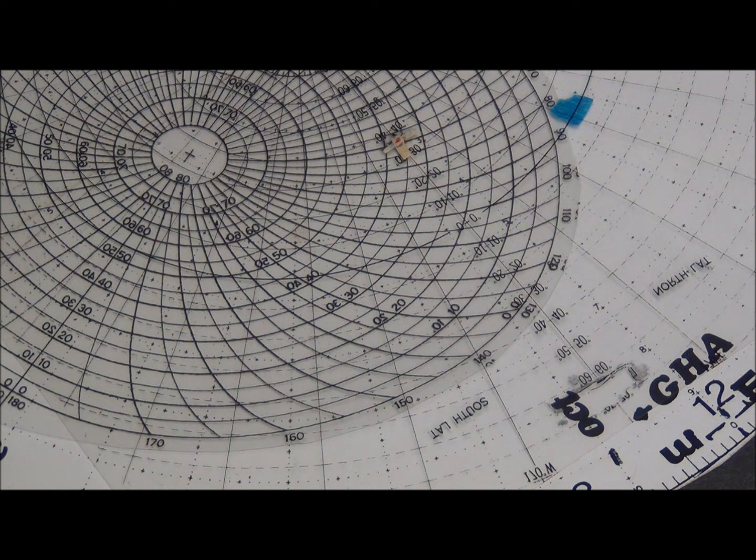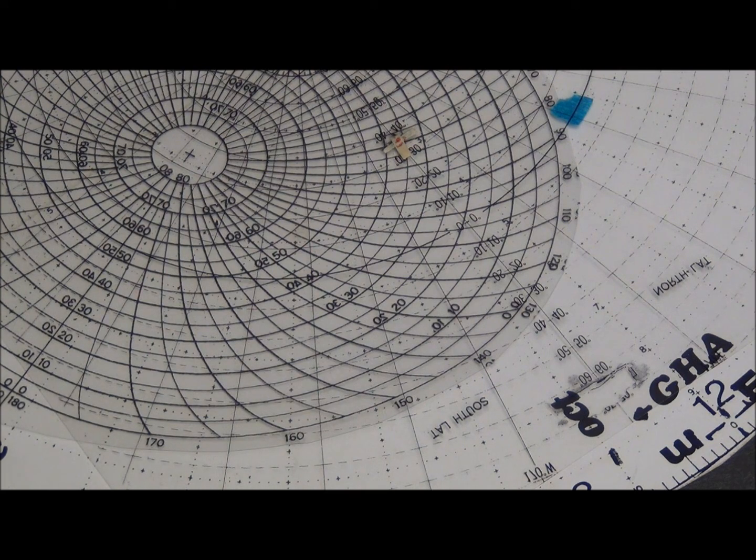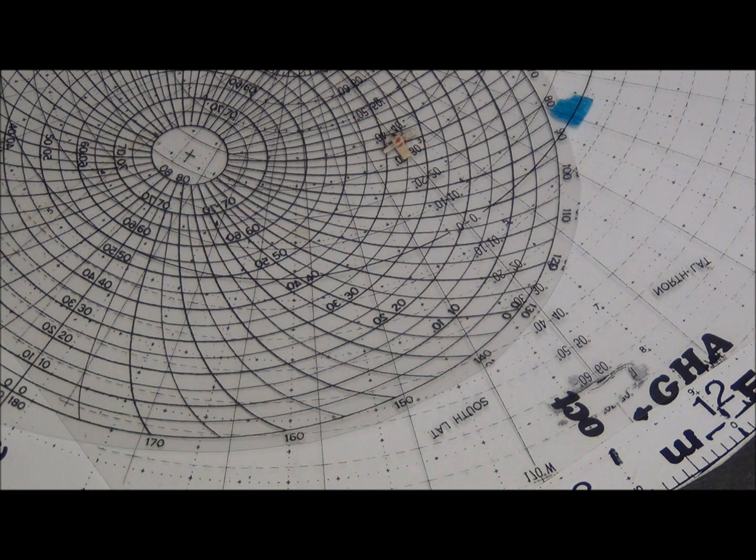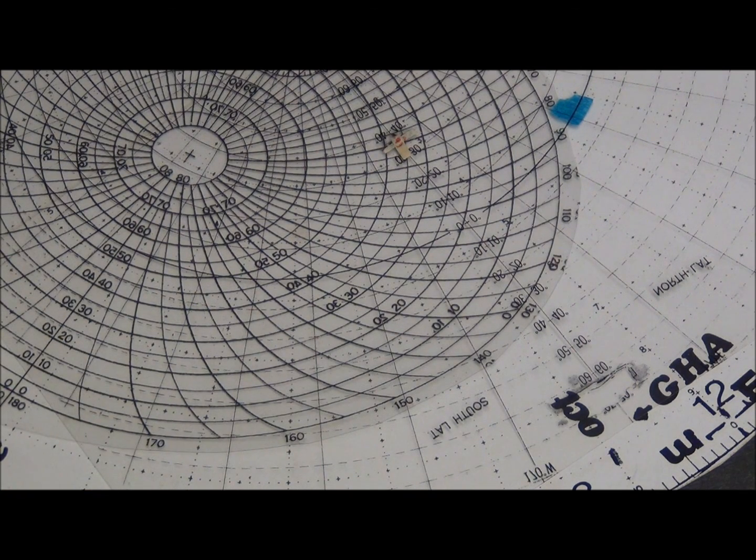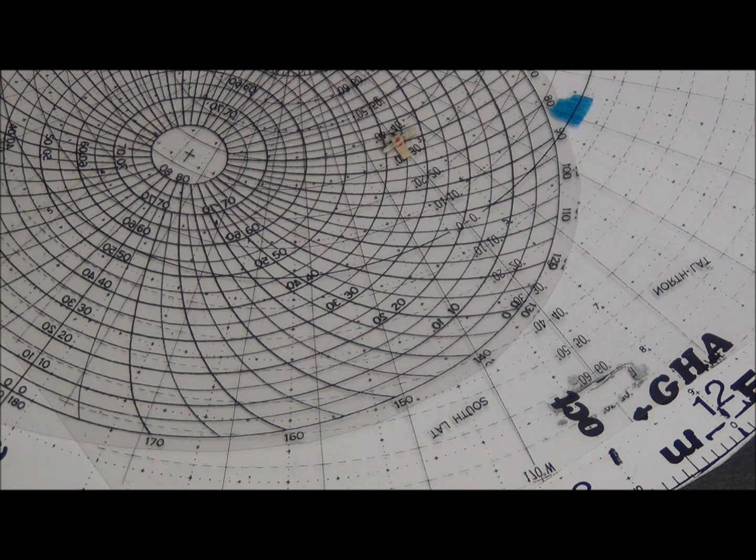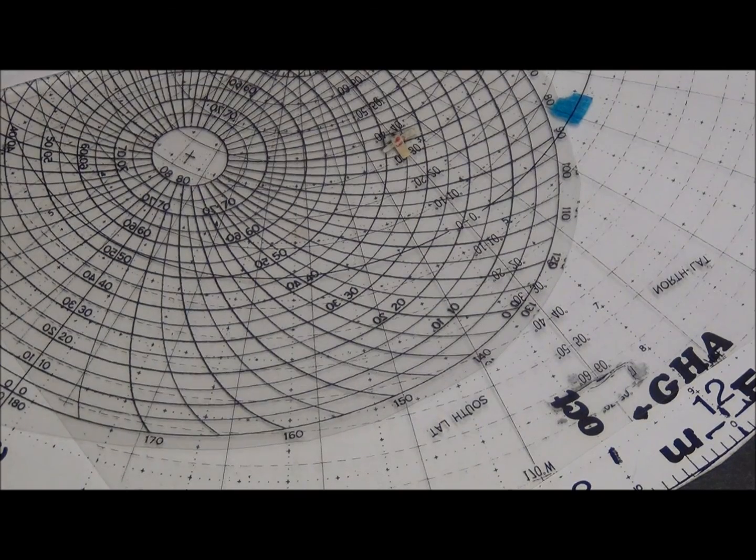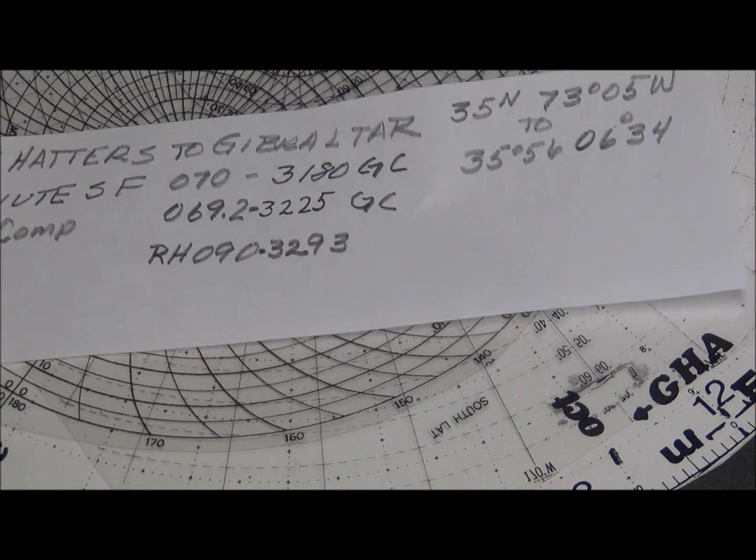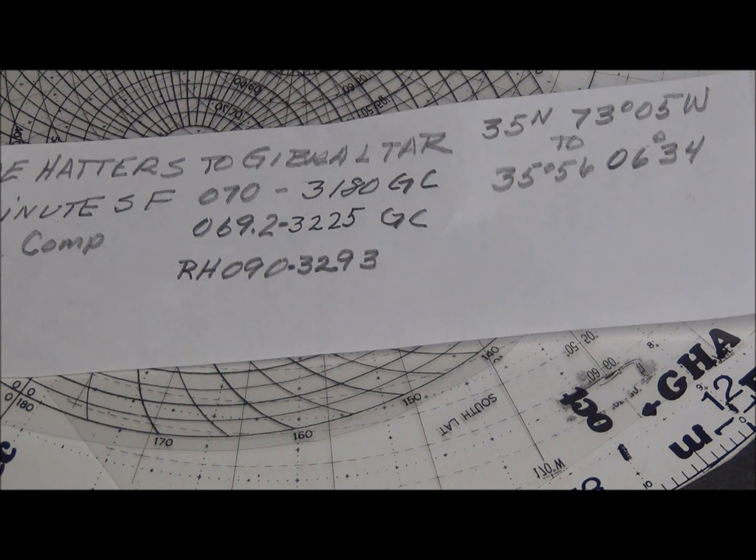So here's what the situation is. We want to go from Cape Hatteras, which is 35 North, 73°05' West, to the entrance to Gibraltar, which is 35°56' North, 06°34' West. So that's quite a distance, and we want to travel this distance by possibly using the Great Circle.